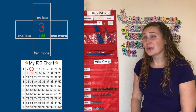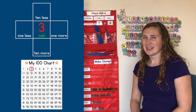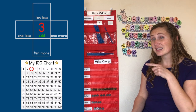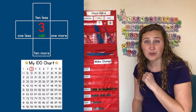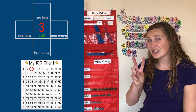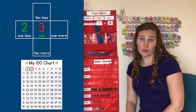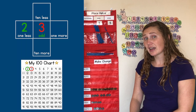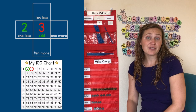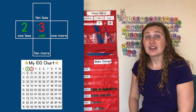What's one less than the number three? Looking at our hundreds chart, one less comes right before three. One less than three is the number two. What about one more than three? Let's look at our hundreds chart again. One more comes right after three. One more than three is four.